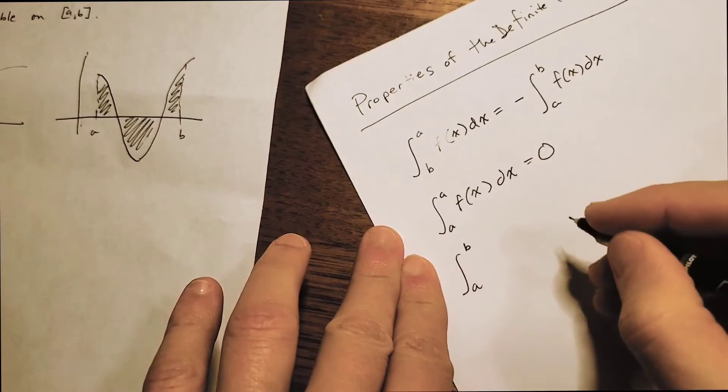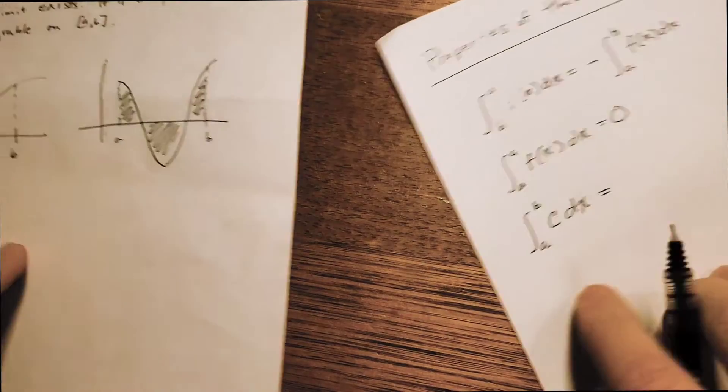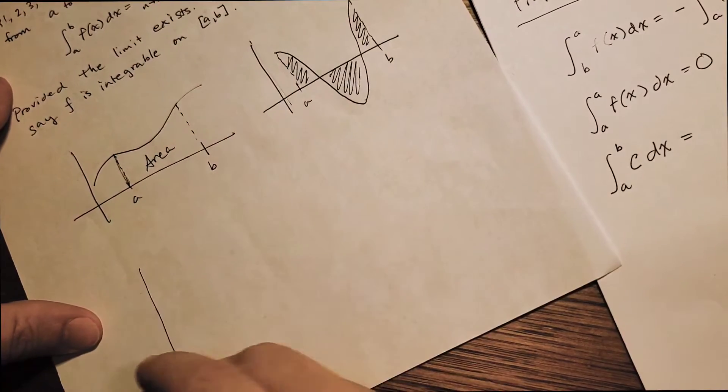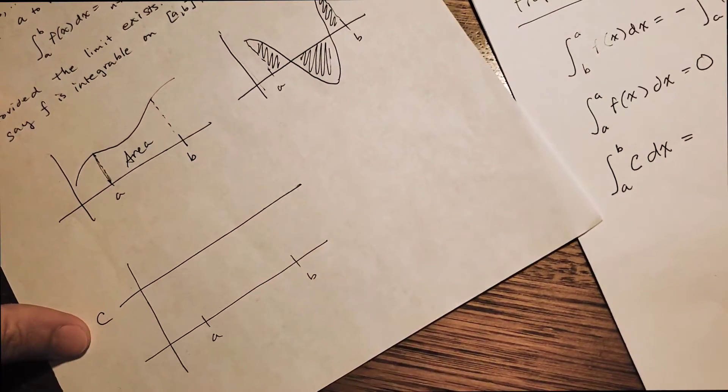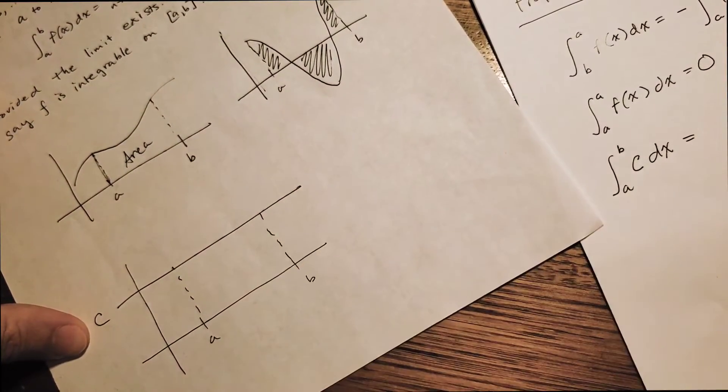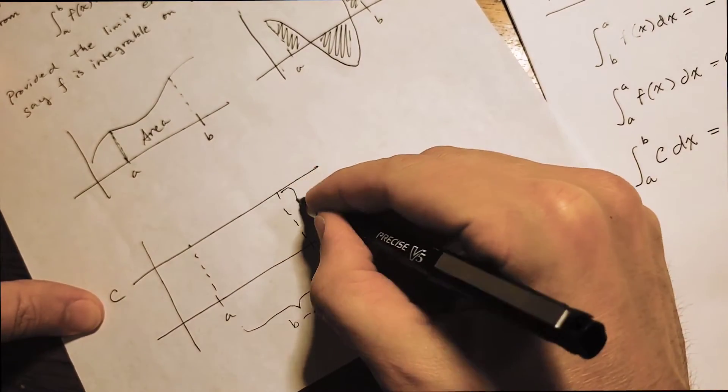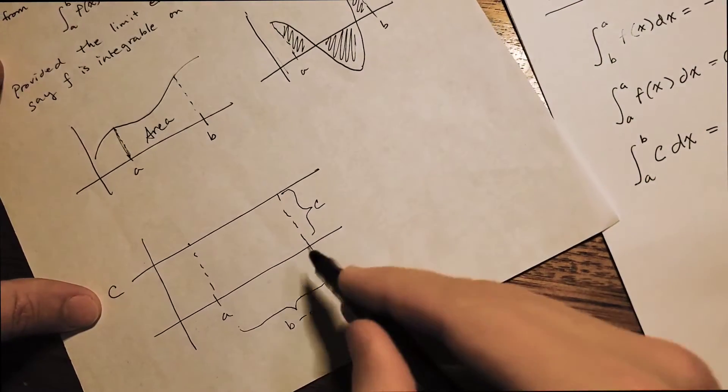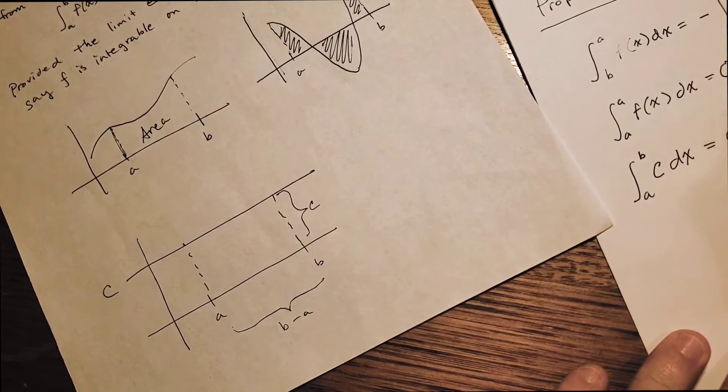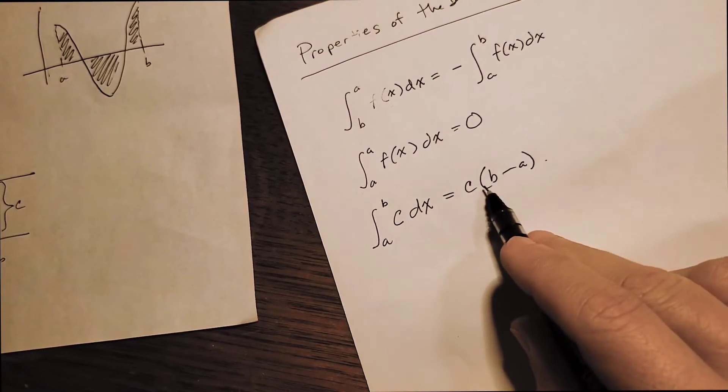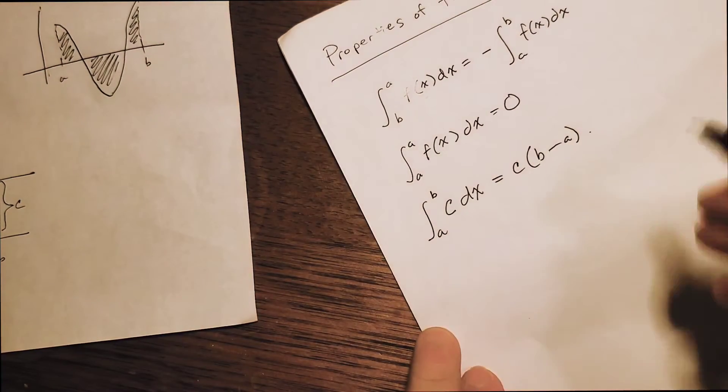We'll take the integral from A to B. C is just going to be some constant. So now this is the integral over a constant function. Let me draw a little picture of this. Here's A, here's B. Here's our constant function. Let's call this C. Well, the area in question now is just a rectangle. The distance between these two points is B minus A. The height here is just the value of the function C. So the area of this rectangle is B minus A times C. So that's an easy one to compute. We don't need to work out any of the limits. We know if it's a constant function, how it's going to look.